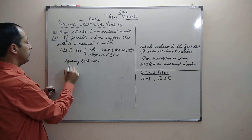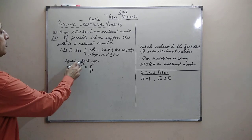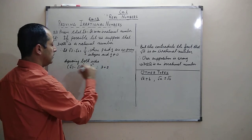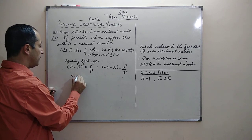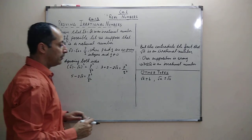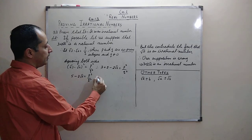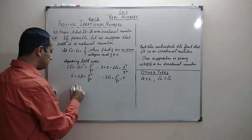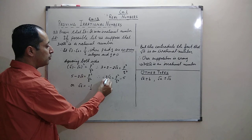Since both terms are under the root, we square both sides. Applying the (a − b)² identity: (√3 − √2)² = p²/q², which gives 3 + 2 − 2√6 = p²/q², that is 5 − 2√6 = p²/q². Simplifying: −2√6 = p²/q² − 5, so √6 = −(1/2)(p²/q² − 5). Squaring has converted the two-root expression into a single-root form, making it easier to simplify.